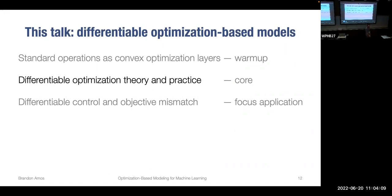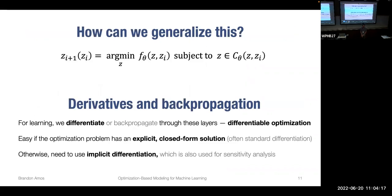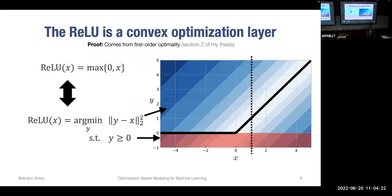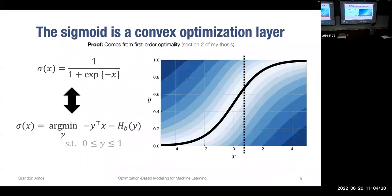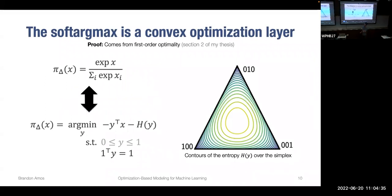An audience question asks whether casting these operations as optimization problems has inherent value beyond intuition. The answer is it's mostly for generalization — for example, the soft argmax viewed as a differentiable top-one operation leads naturally to top-K computations, where we project onto a CAPS or KNAPSACK polytope that doesn't have a closed-form solution. These examples set the stage to show we can represent interesting non-convex functions with convex optimization.